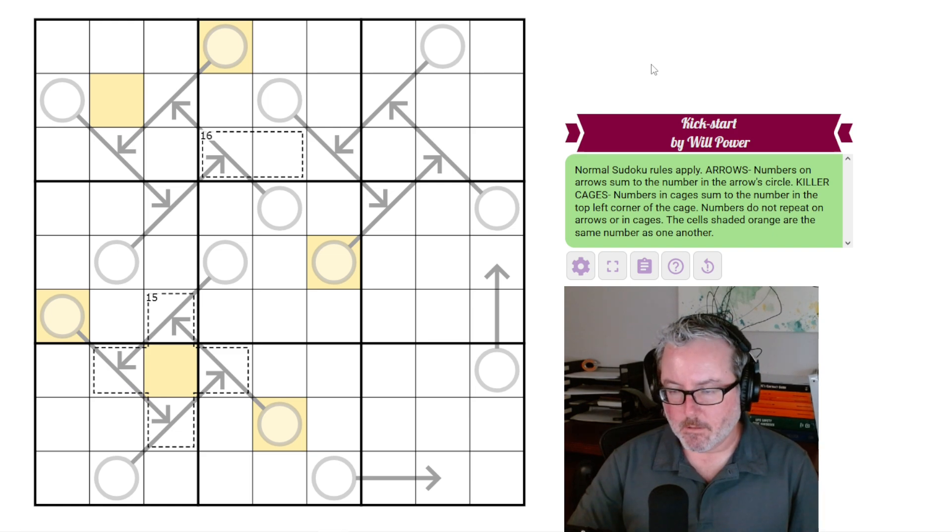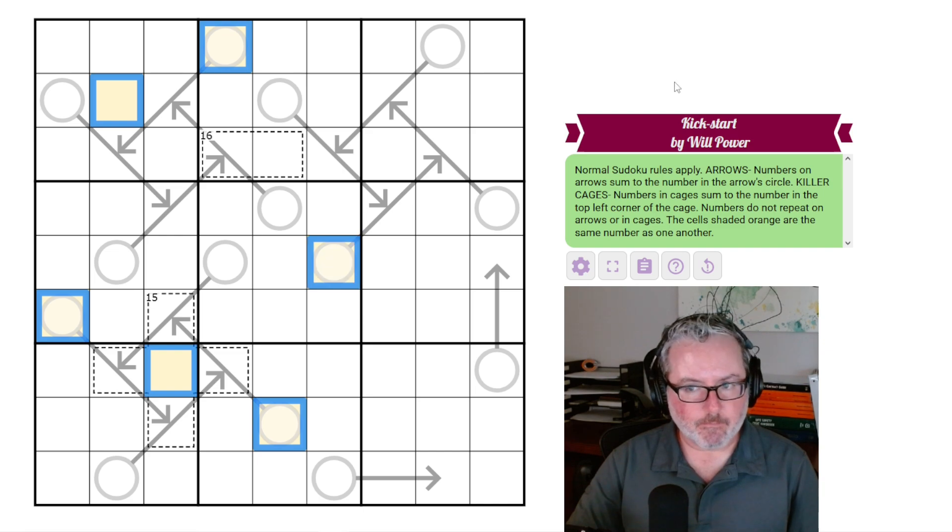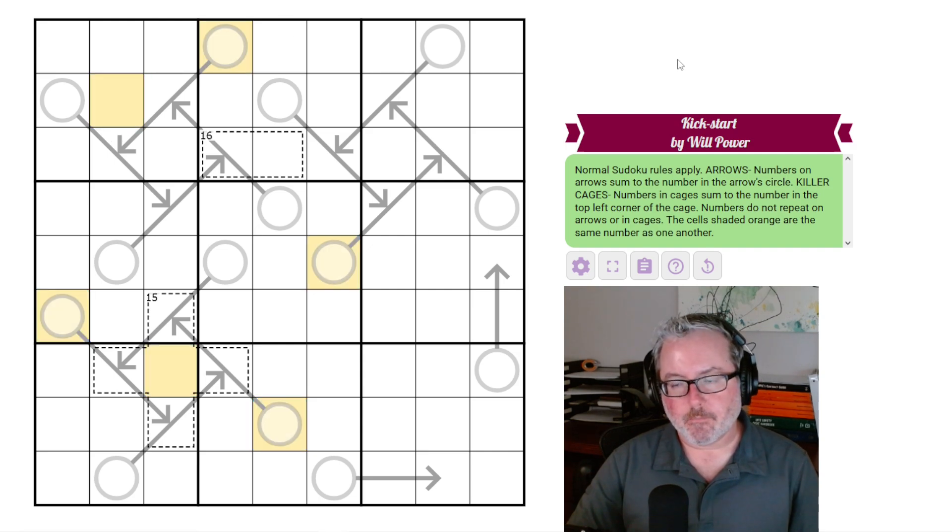Going back to the cages, whatever these digits are, they must all add up to 15 and not repeat. And then the last little bit here says these cells shaded orange are the same number as one another. So these must all be the same digit. I wonder if that's why it's called kickstart, because he's kind of giving you a little in here.